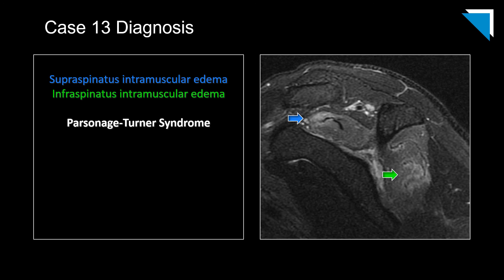But when you see this pattern of involvement — specifically the supraspinatus and infraspinatus muscle bellies — I want you to think of Parsonage Turner syndrome, especially in a case with a history of subacute trauma. When you see these two muscle bellies involved, it's generally the suprascapular nerve that is affected. In some cases you will also see deltoid muscle involvement, in which case the axillary nerve is involved as well. This concludes the second segment of our QA forum; I hope you'll join me for the next segment, where I will discuss common imaging findings with COVID-19 pneumonia.